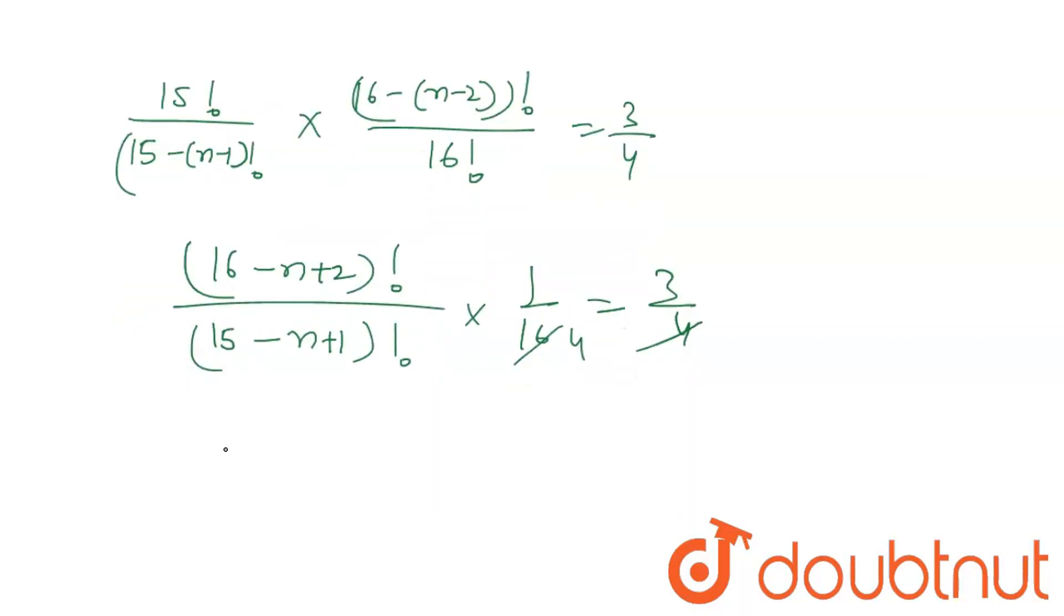So I will write 16 plus 2 as 18. So 18 minus n factorial into 17 minus n factorial into 16 minus n factorial. 16 minus n factorial.